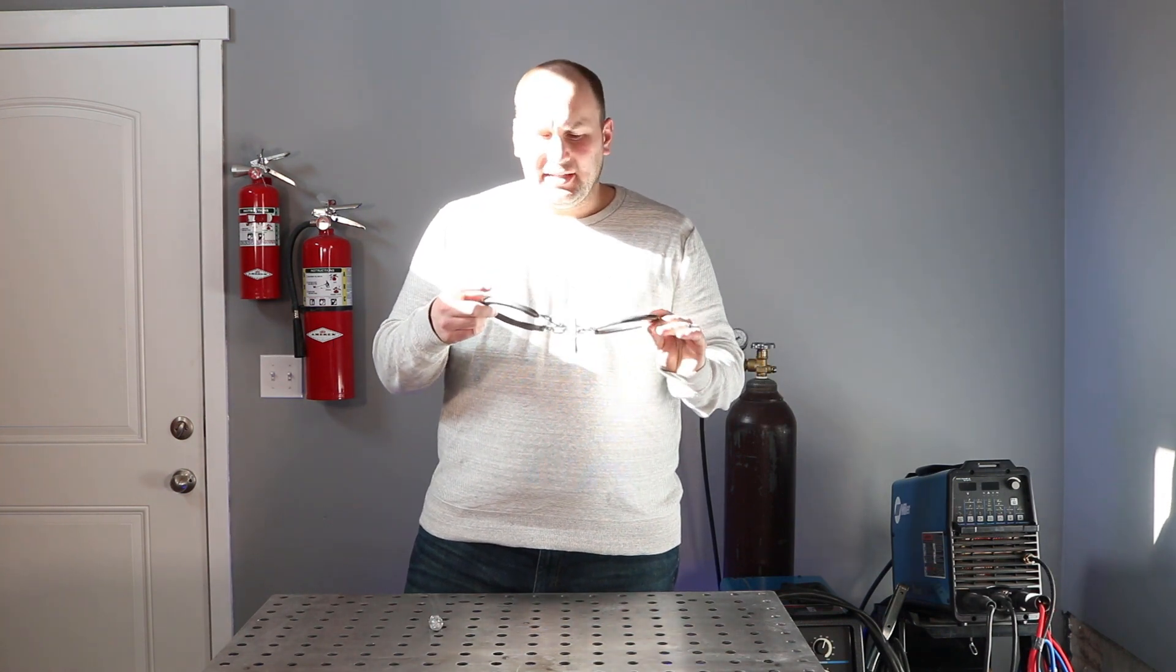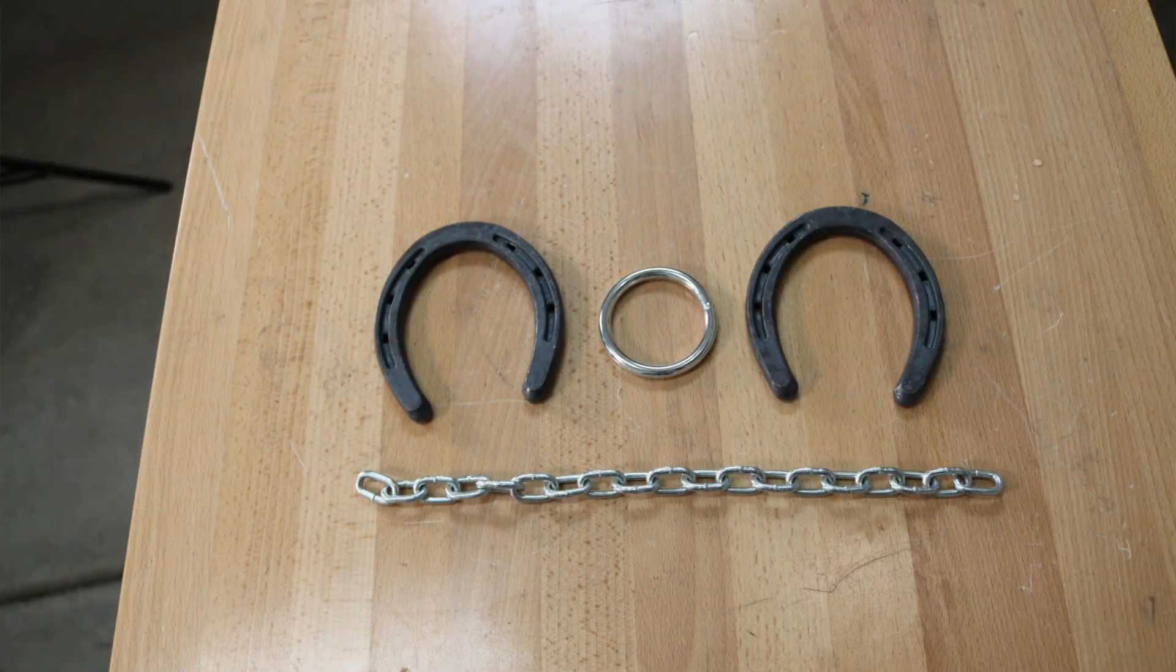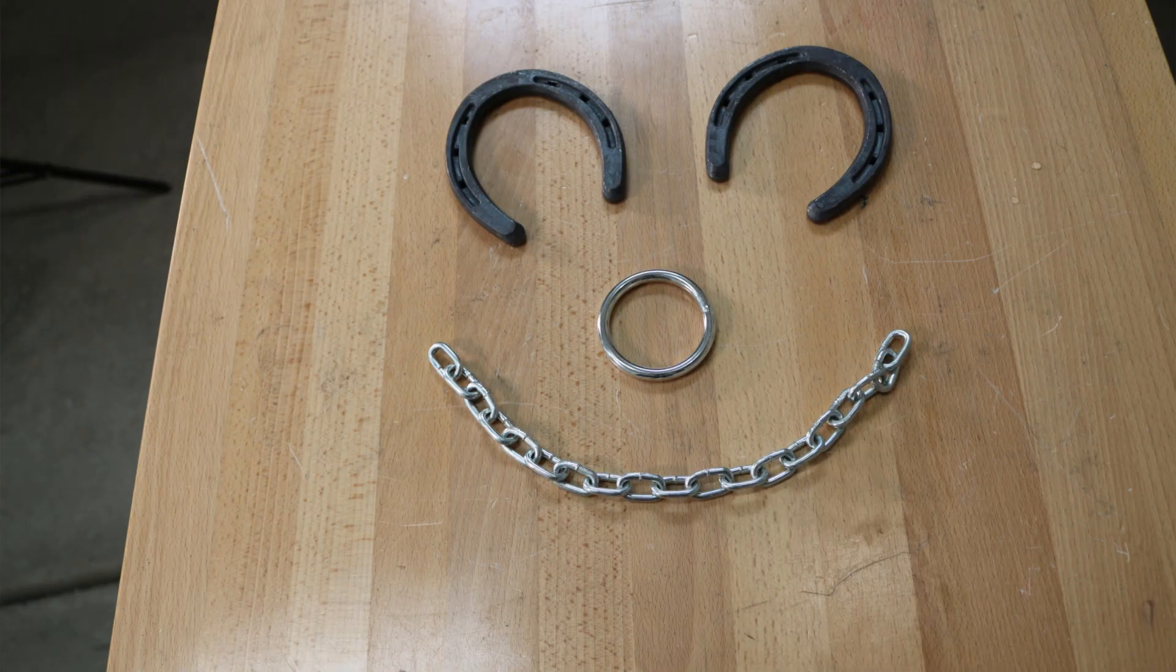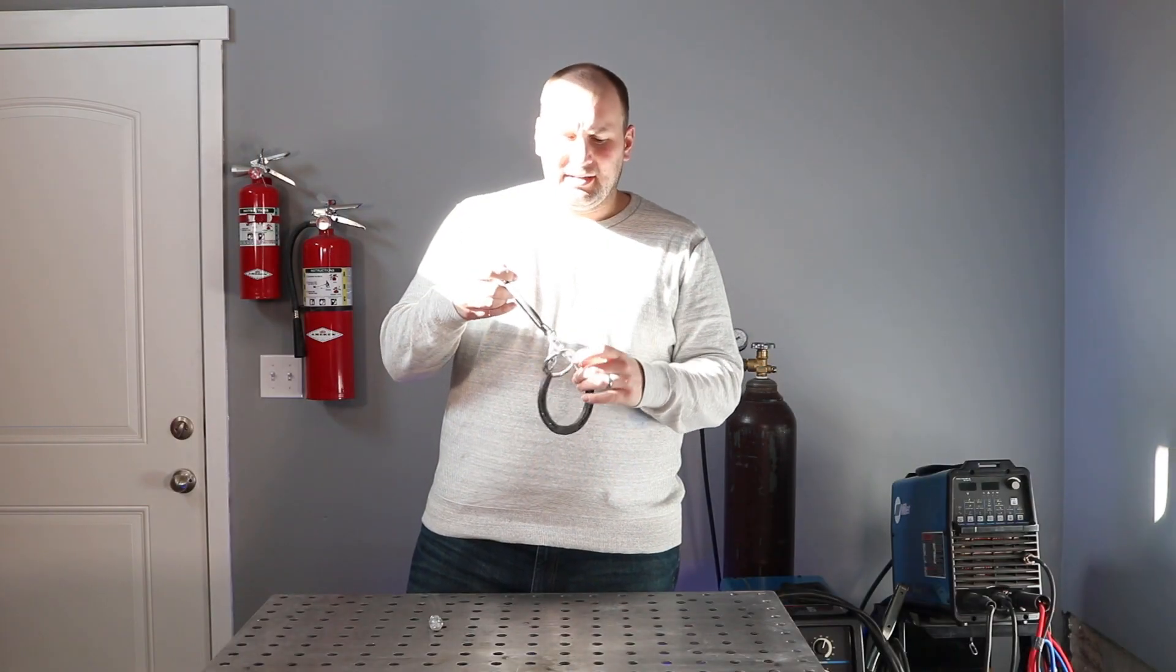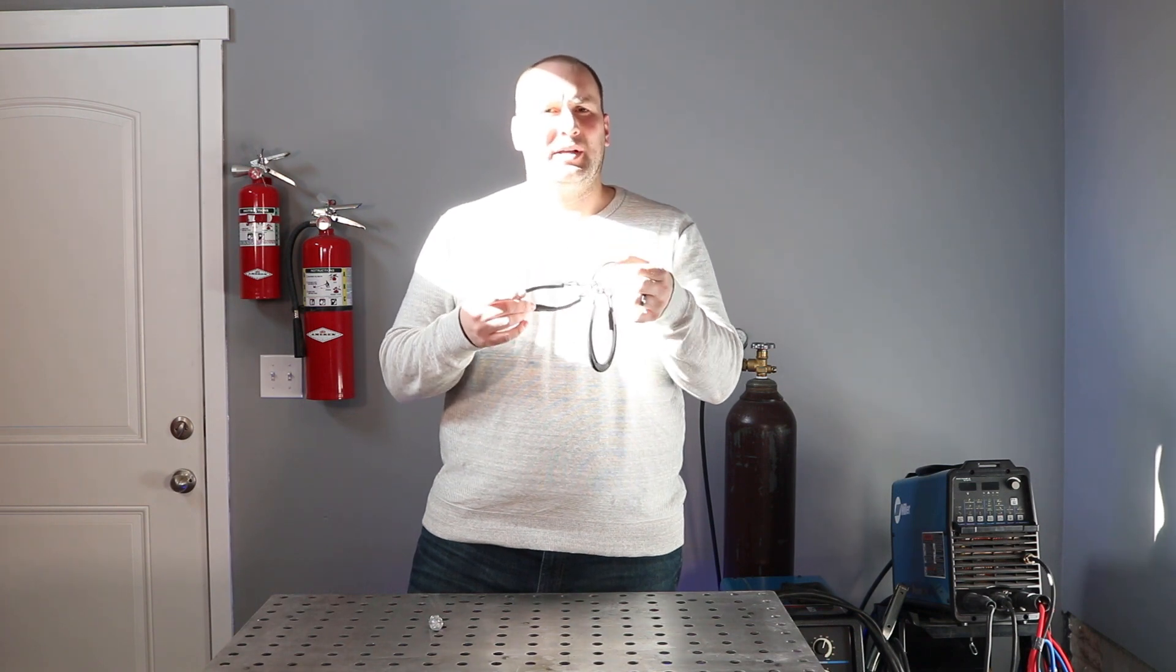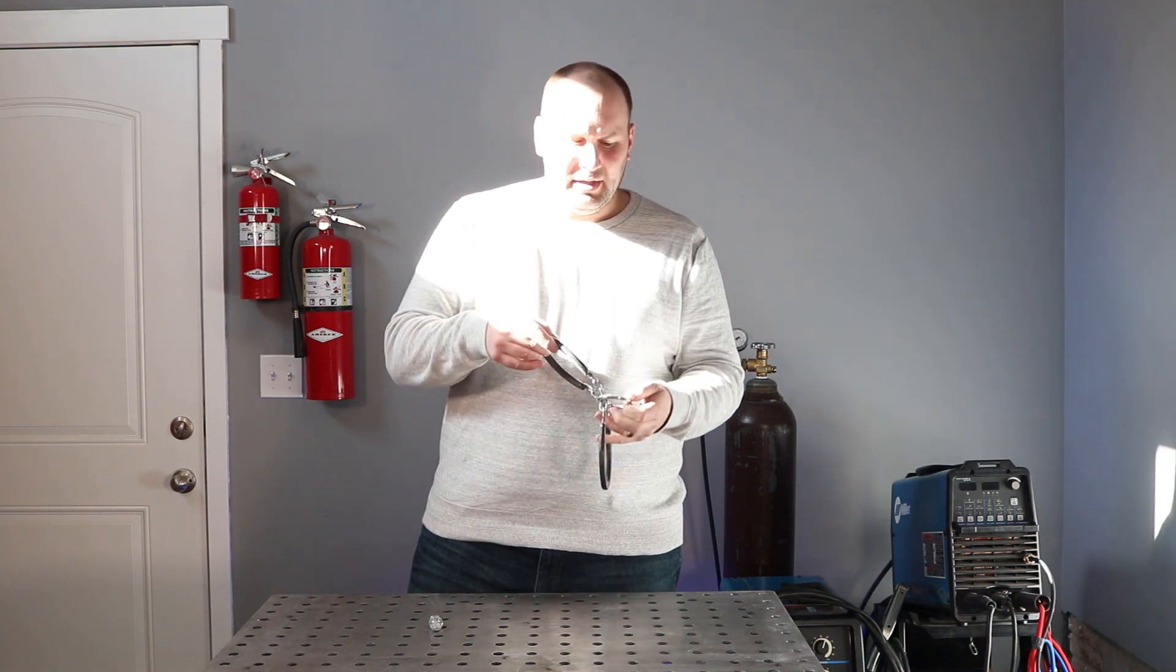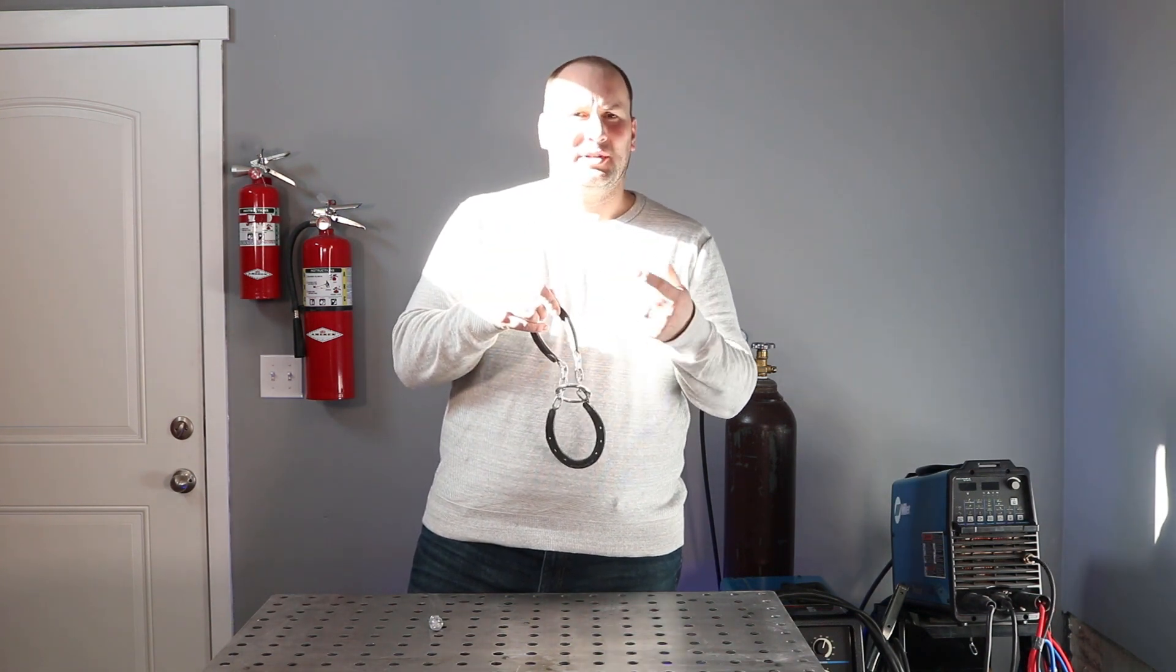To make this all you need are two horseshoes. I used pony shoes on this, so smaller horseshoes. I don't know a lot about horseshoes but I think they're for ponies, and then a few links of chain and a ring. I picked up all this at the local farm store. The idea here is you have to get the ring off of the horseshoes, and it is possible, you'll see in a minute.